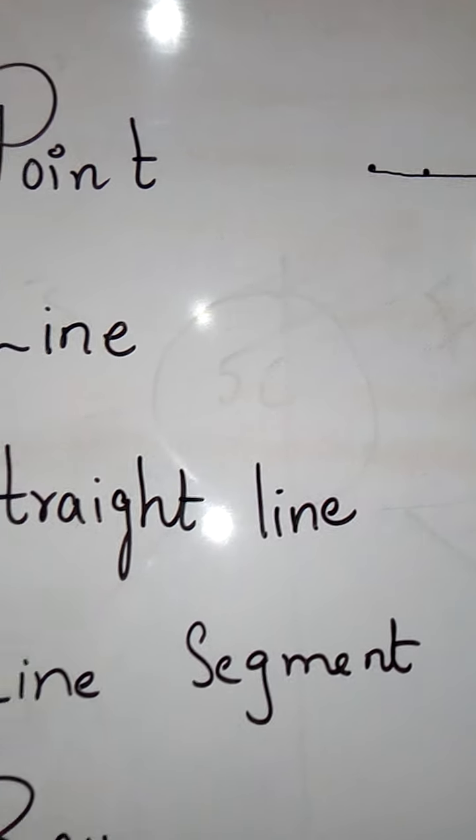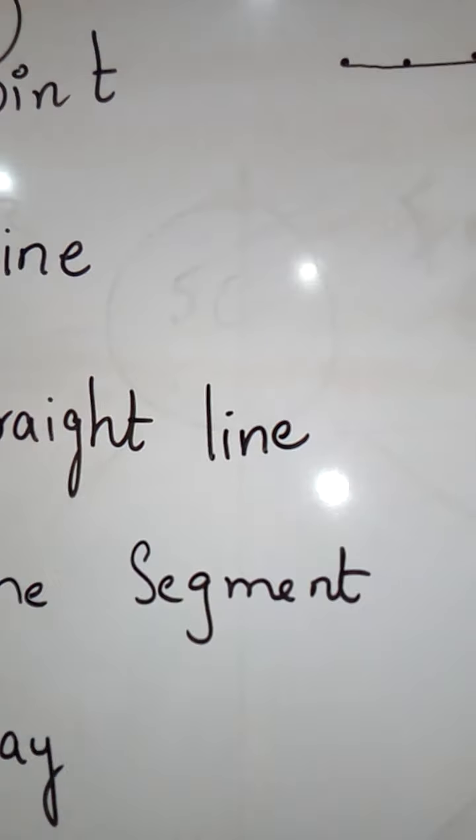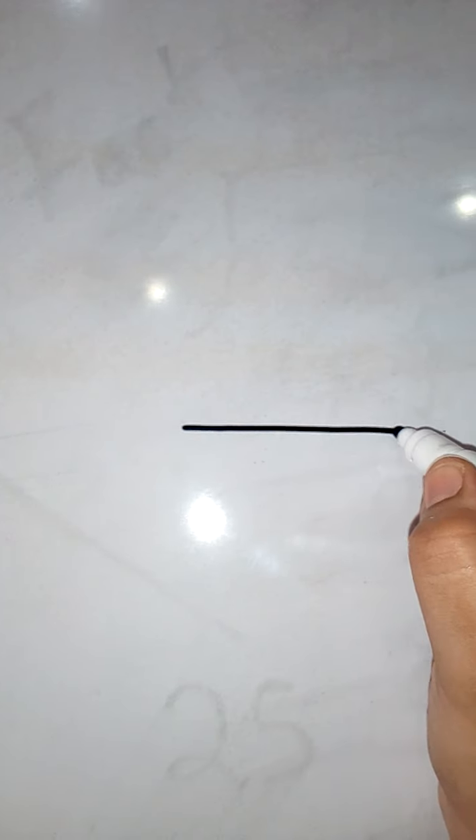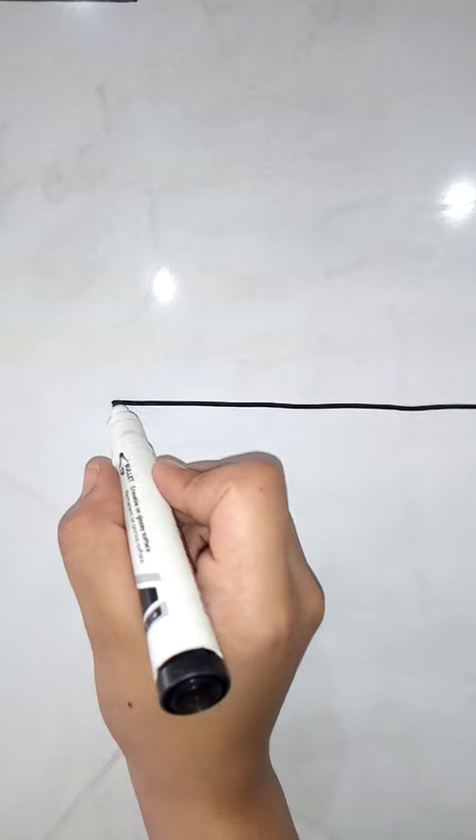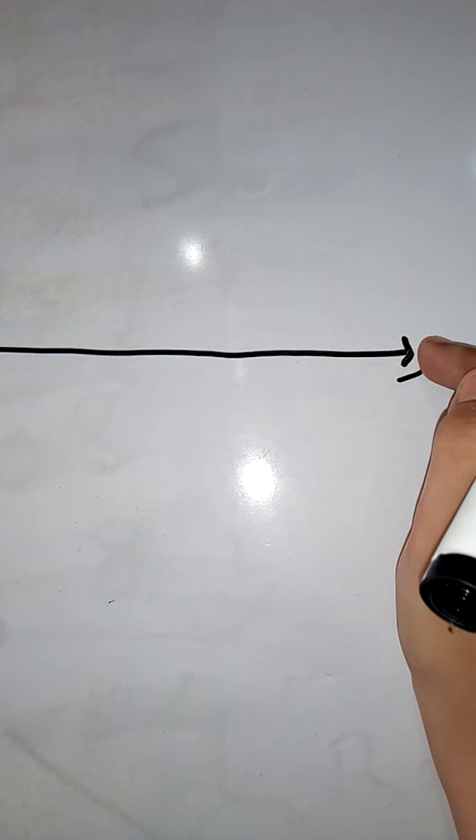And there are some types of lines in which you have learned about the straight line. Now, what is a straight line? Straight line is something which goes on and on in both of the directions without changing its direction. And that's why it is represented with the arrow heads on both of the ends.